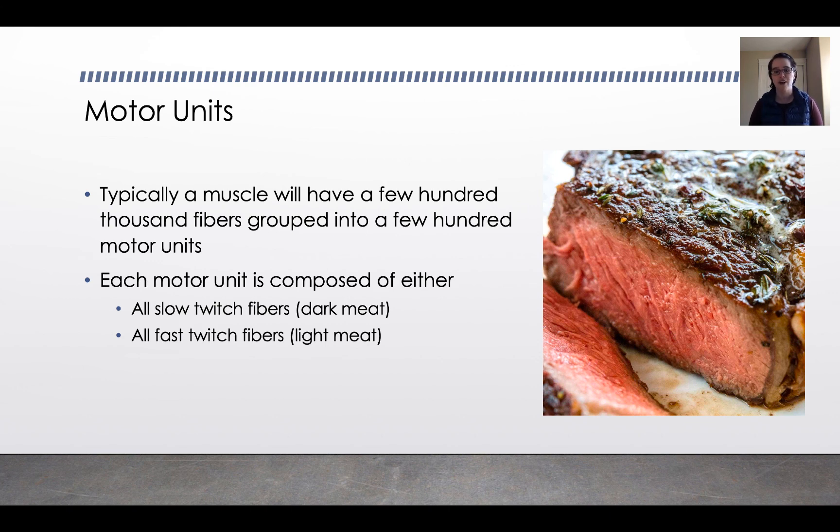You may have muscles where you have more of one type than the other, and you may have people who have more fast twitch motor units than others. That probably is part of what predetermines whether someone is a good sprinter or not. You can develop some of those things, but some people are just genetically better sprinters, and other people are genetically better distance runners. And then there's the rest of us in the middle.